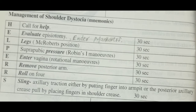Then comes R, R — the two R's. One R stands for 'Remove posterior arm' and another R stands for 'Roll on floor.' In the end we have S. S is for 'Sling.'